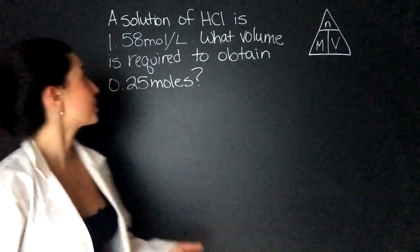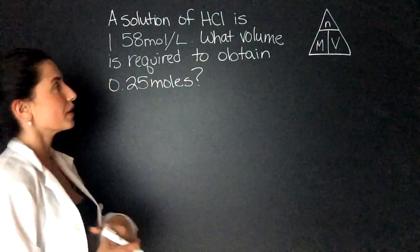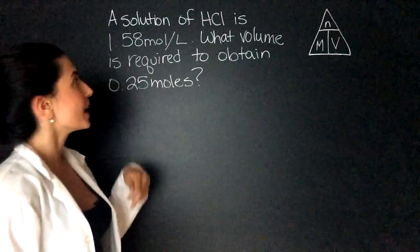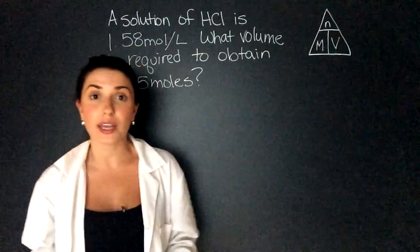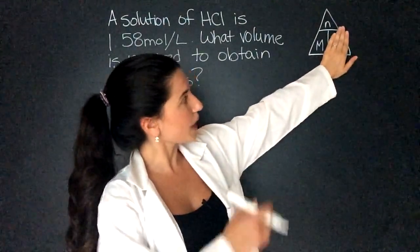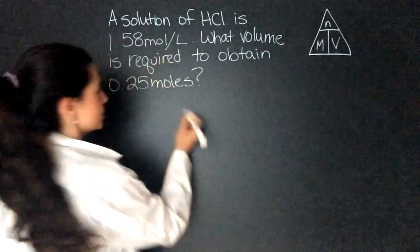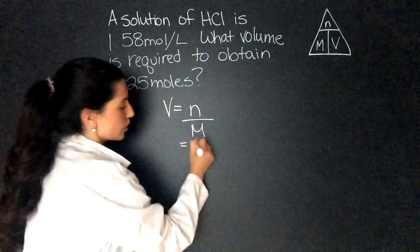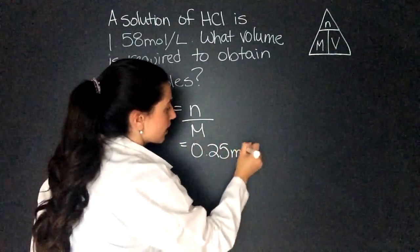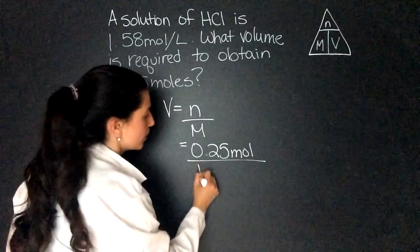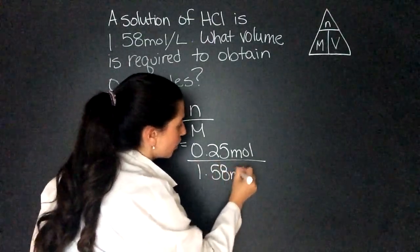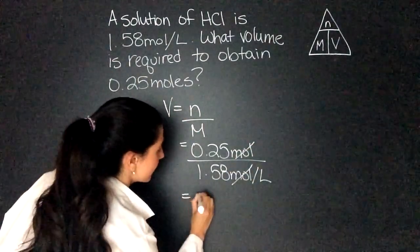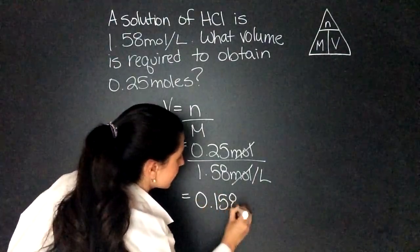The next problem reads, a solution of HCl is 1.58 moles per liter. What volume is required to obtain 0.25 moles? So they give us molarity and they give us moles. So we're looking for volume and we cover that up and we know it's moles divided by molarity. So volume equals moles divided by molarity, which equals 0.25 moles divided by 1.58 moles per liter. The moles will cancel out and we're left with 0.158 liters.